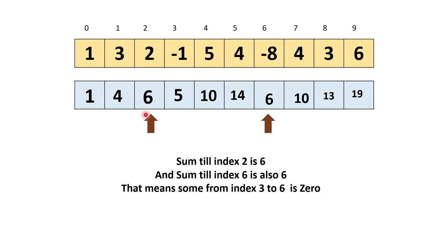Now, how do we efficiently check whether a prefix sum has been seen before? Using an array would require a linear search. Instead, we use a hash set, where in O(1) time — assuming a good hash function — we can check whether a particular sum value is already contained. That's why we use a hash set instead of an array. If the problem also requires returning the actual index positions, then we use a hash map to keep track of indexes. Now let's jump into the programming section.